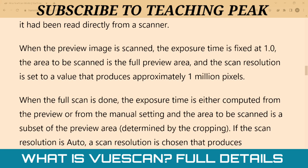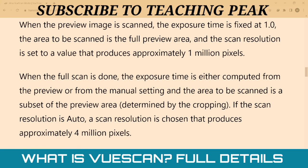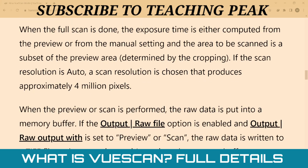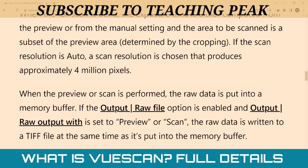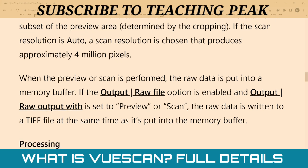The scan resolution is set to produce approximately 1 million pixels. When the full scan is done, the exposure time is either computed from the preview or from the manual setting, and the area scanned is a subset of the preview area. If the scan resolution is auto, a resolution is chosen that produces approximately 4 million pixels. If the output raw file option is enabled and set to preview or scan, the raw data is written to a TIFF file at the same time it's put into the memory buffer.